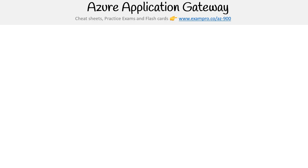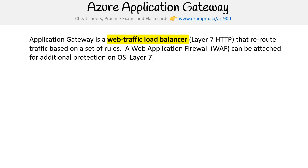Hey, this is Andrew Brown from ExamPro, and we're looking at Azure Application Gateway. We talked about Application Gateway earlier — it is a load balancer, specifically an application load balancer, so it operates on layer seven. It's dealing with HTTP requests, and because it's dealing with HTTP requests, it can actually understand the nature of a request, and you can create rules to route traffic to other places.